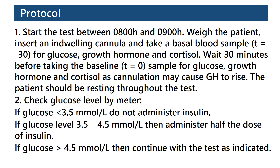The patient should be resting throughout the test. Check glucose level by meter. If glucose is less than 3.5 mmol per liter, do not administer insulin. If glucose level is between 3.5 to 4.5 mmol per liter, then administer half the dose of insulin. And if glucose is more than 4.5 mmol per liter, then continue with the test.